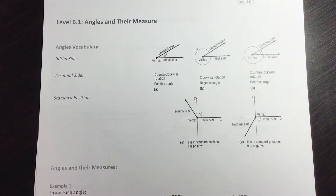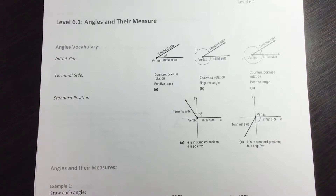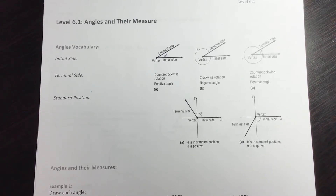This is the beginning of Unit 6, which has a lot to do with trigonometry. Before we actually get to trigonometry, we're going to remember some geometry concepts. Trigonometry has to do a lot with angles and triangles, so we're going to do some brief review on those things.